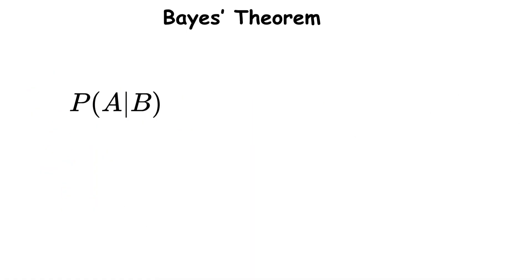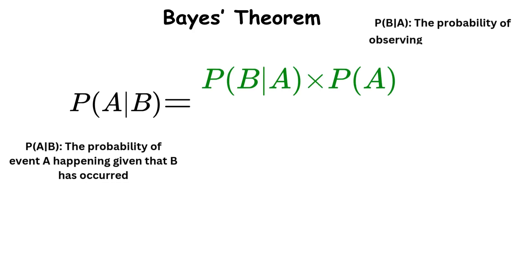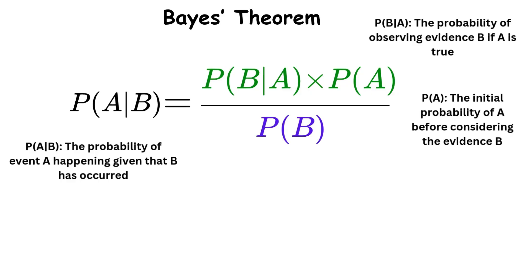The theorem states that the probability of an event occurring given new evidence equals the probability of the evidence given the event, multiplied by the prior probability of the event, divided by the total probability of the evidence.